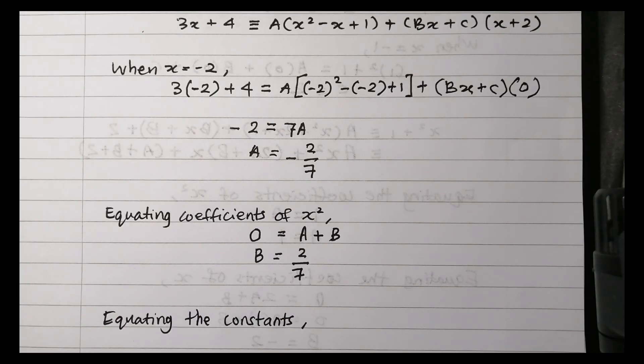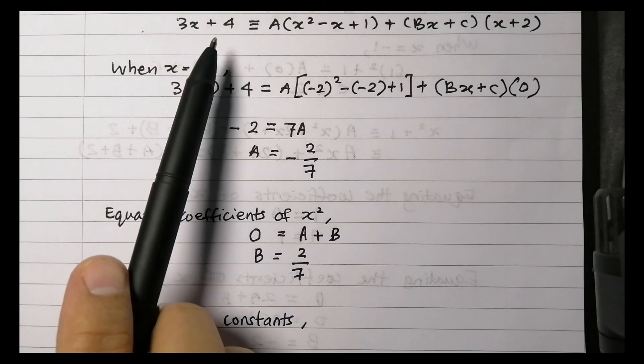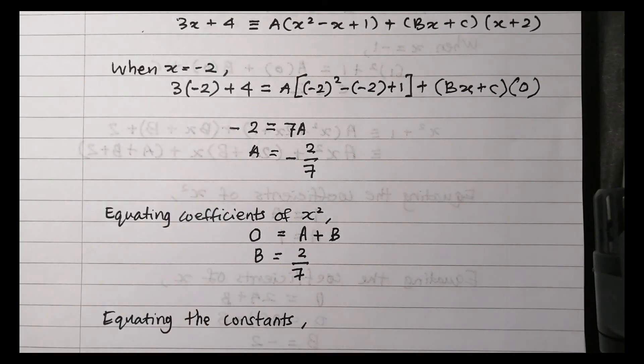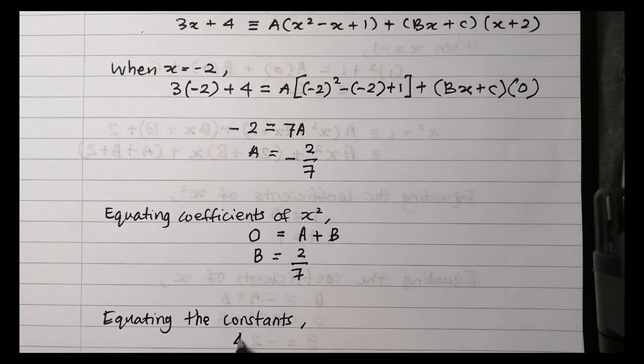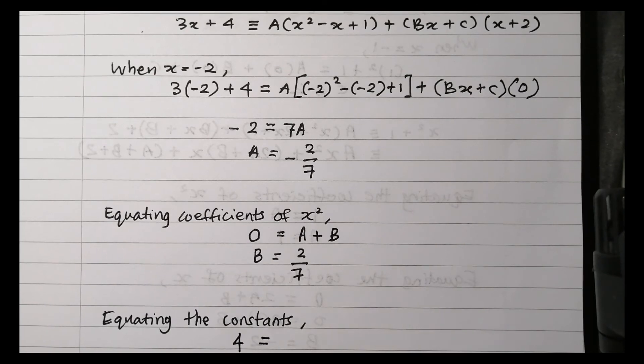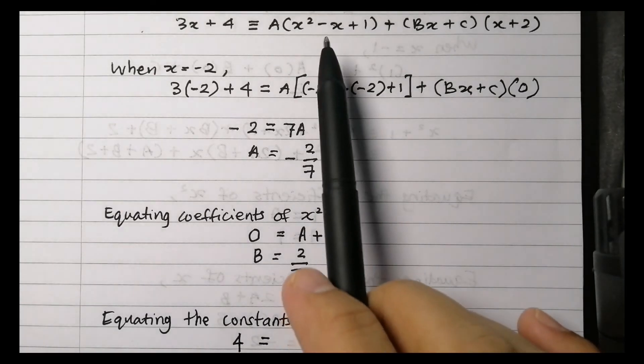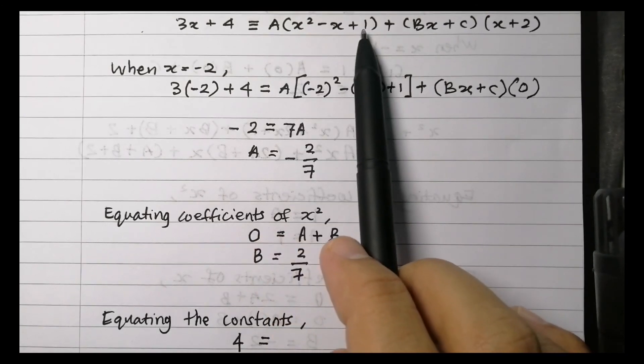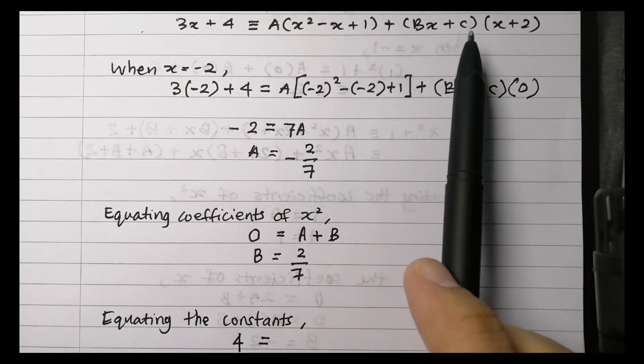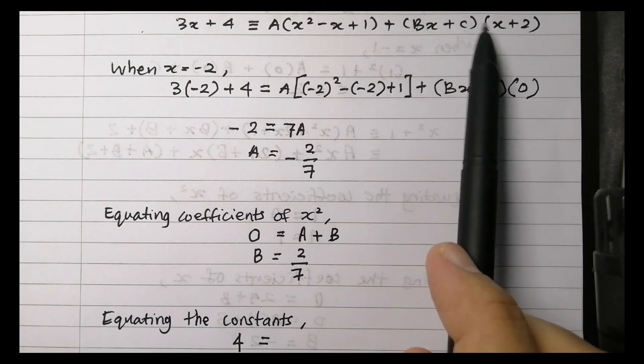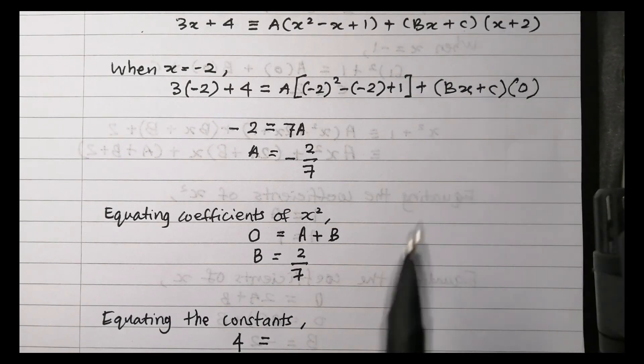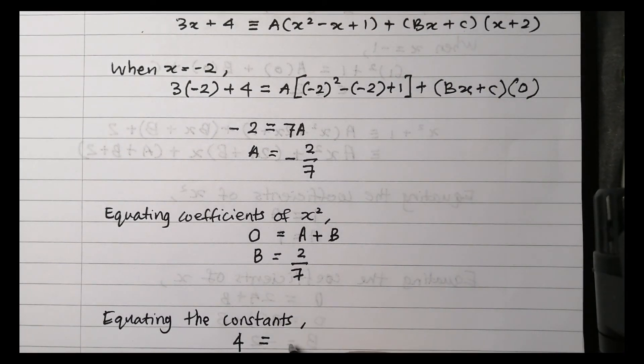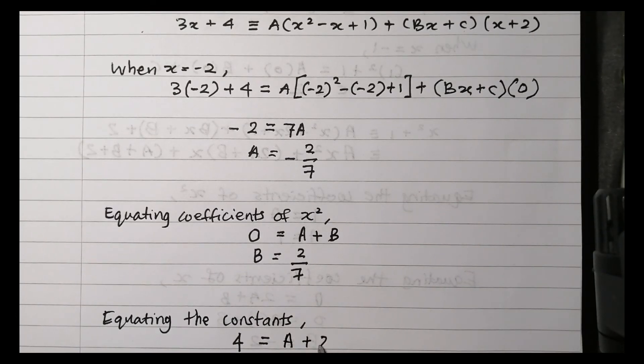For the value of C, we are going to equate the constant. From the left-hand side, the constant is 4. On the right-hand side, we need to expand the factors, so the constant is A plus 2C.